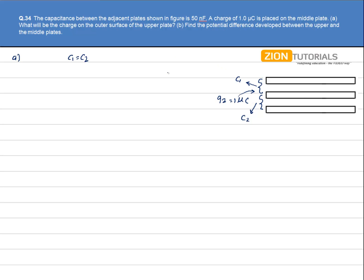Since the capacitances are equal, the charges will be the same. Whatever charge is given to the middle plate will be equally distributed across it. We have 1 micro coulomb as the total charge, so 0.5 micro coulomb appears on one surface and the remaining 0.5 micro coulomb on the other surface — both are positive.